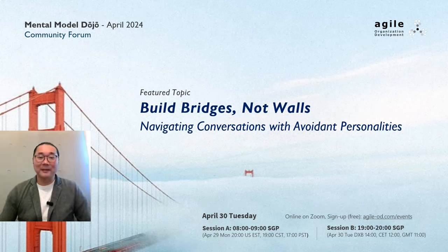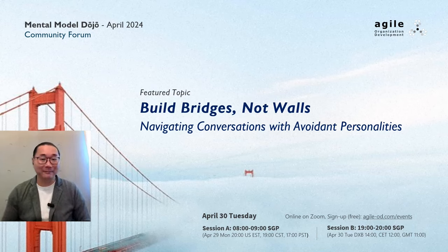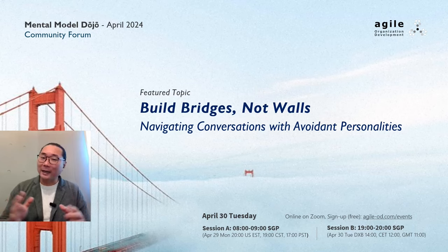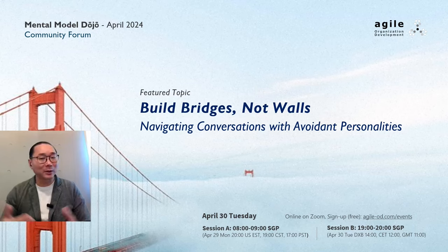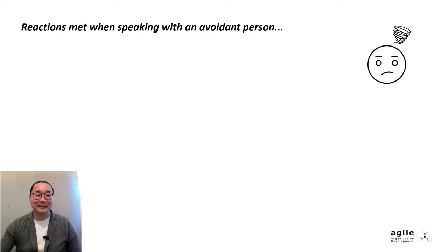Navigating conversations with avoidant personalities. We all have experiences of feeling like we're talking to a brick wall when speaking to someone. Why can't I have a normal conversation with this person? Frustrating, isn't it? Let's talk about that today. How to have a normal conversation with an avoidant person?